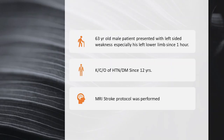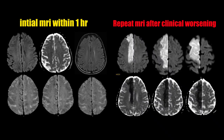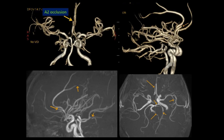A 63-year-old male patient presented with left-sided weakness, especially his left lower limb, since one hour. He is a known case of hypertension and diabetes since 12 years. Initial MRI within one hour showed normal diffusion and ADC. Repeat MRI after clinical worsening showed a large ACA infarct on the right side. MR angiogram images showed A2 occlusion on the right side, with stenosis also noted in the left distal ACA, P4 segment of PCA, left MCA, and left vertebral artery.